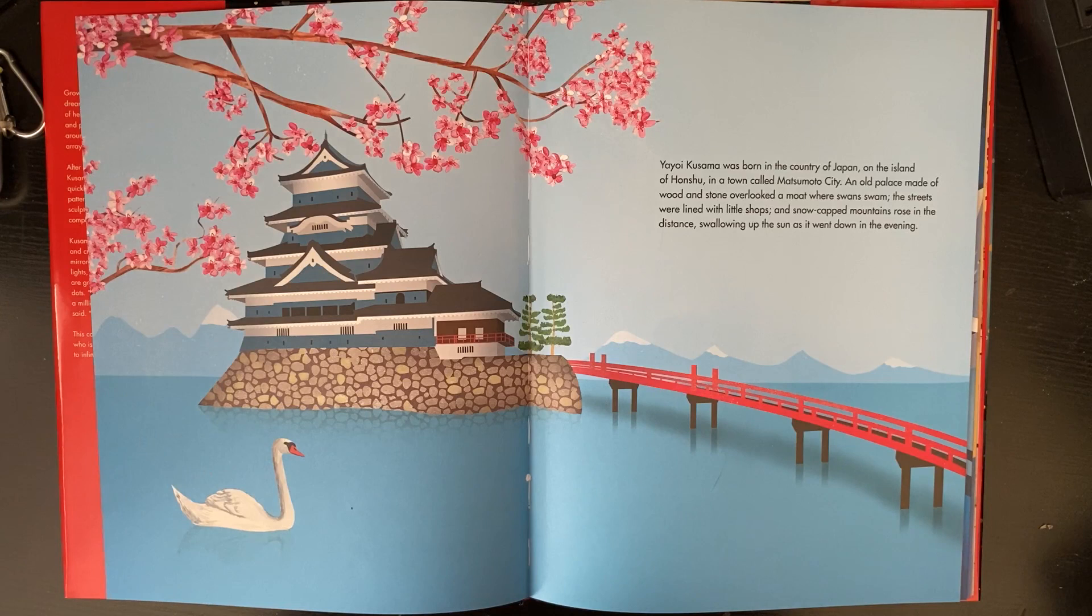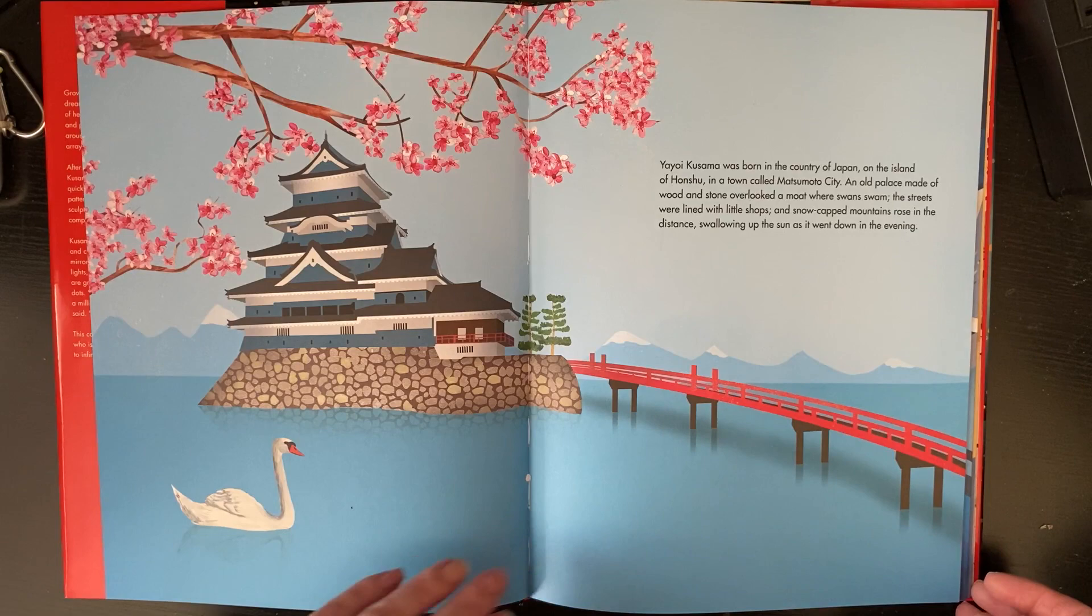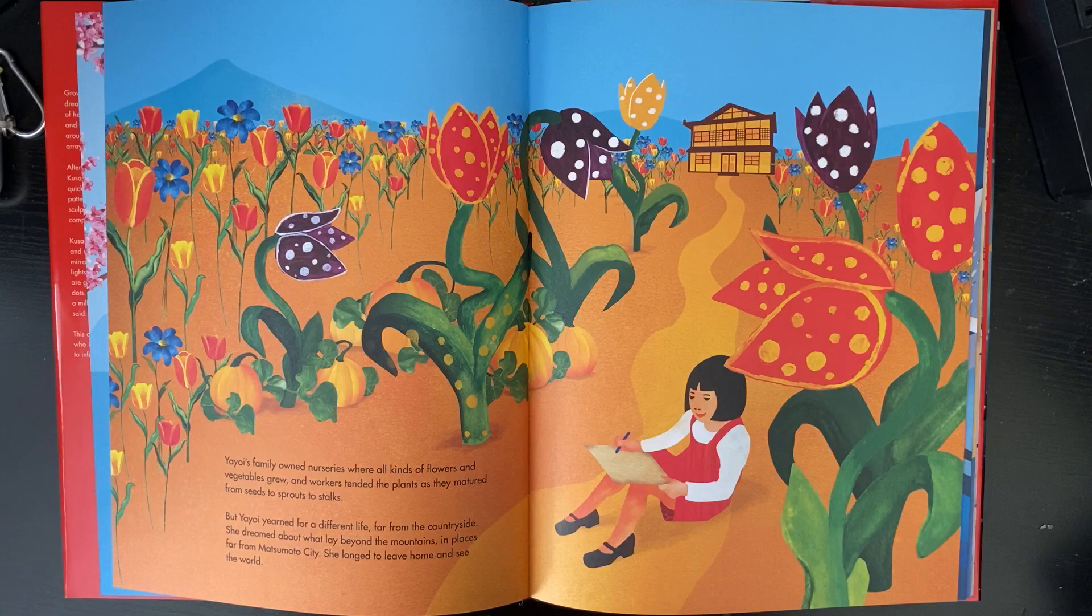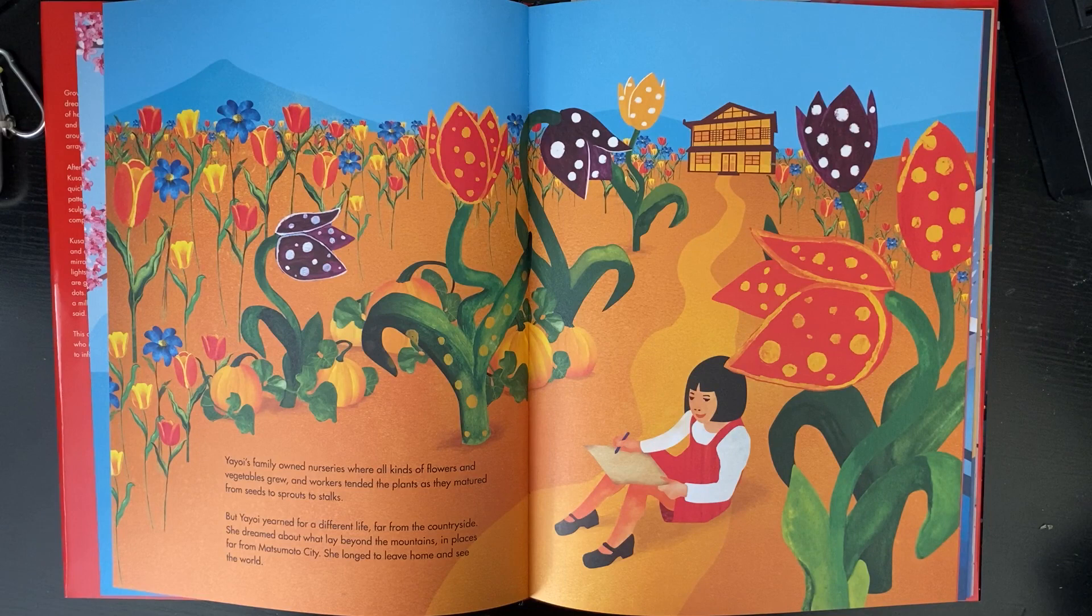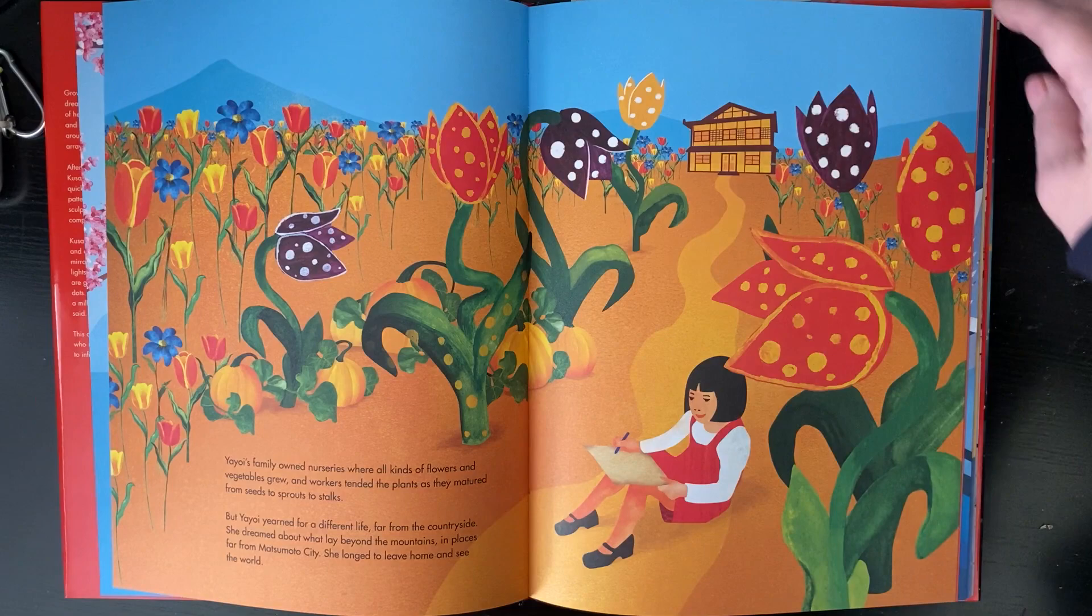Yayoi Kusama was born in the country of Japan on the island of Honshu in a town called Matsumoto City. An old palace made of wood and stone overlooked a moat where swans swam. The streets were lined with little shops and snow-capped mountains rose in the distance. Yayoi's family owned nurseries where all kinds of flowers and vegetables grew, but Yayoi yearned for a different life. She dreamed about what lay beyond the mountains and longed to leave home and see the world.